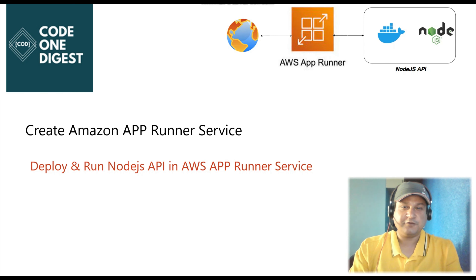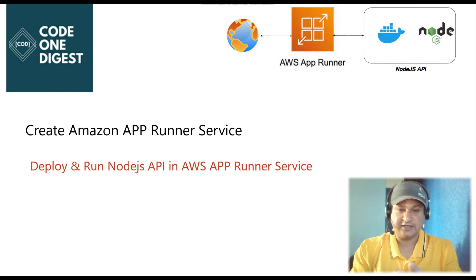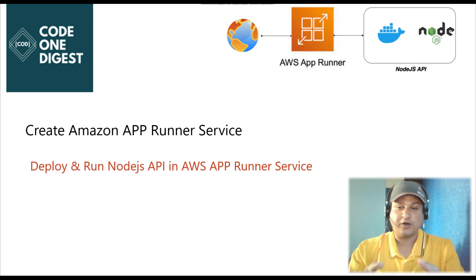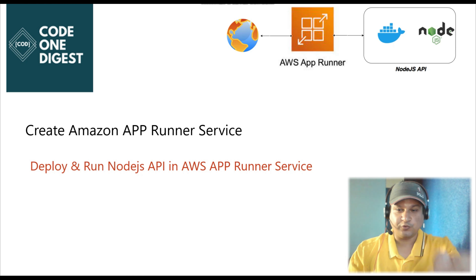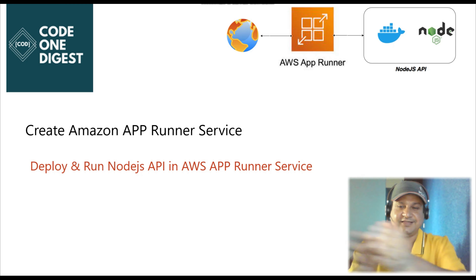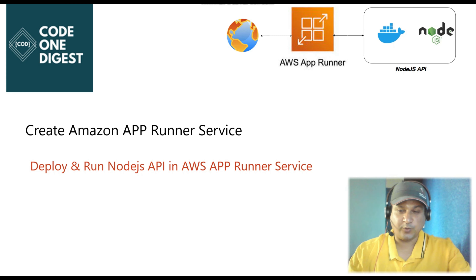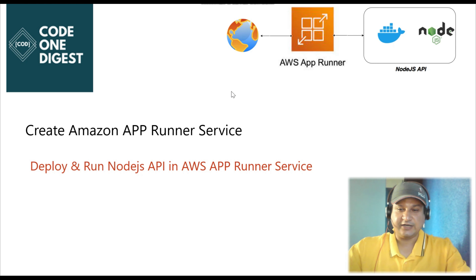Hello, good morning friends, welcome back to Code One Digest. Today in this tutorial I am going to explain how to run a Node.js API project into Amazon App Runner service, what App Runner service is, what the difference between App Runner and ECS Fargate is, how to run a containerized application into App Runner, and what advantages we get running in App Runner over Fargate.